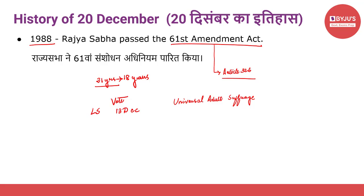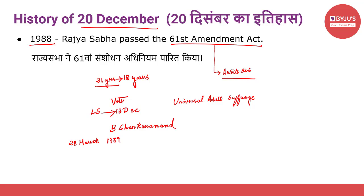The bill was introduced by the then Water Resource Minister B. Shankaranand. Subsequently, the bill was debated and passed by the Lok Sabha on 15th December. The Rajya Sabha also passed the bill on 20th December 1988. This particular bill, the 61st Amendment Bill, was also ratified by more than half of the state legislatures as required. The bill received presidential assent on 28th March 1989.